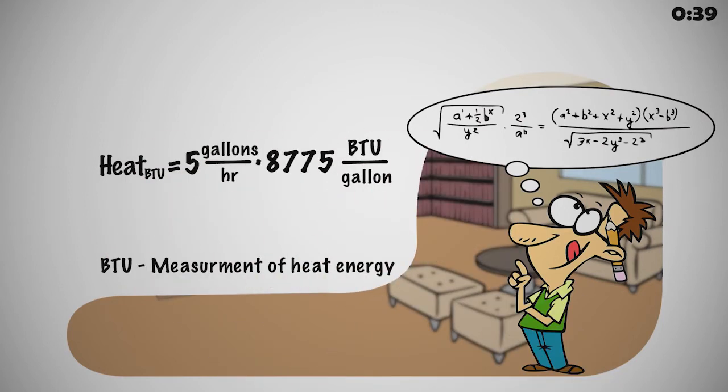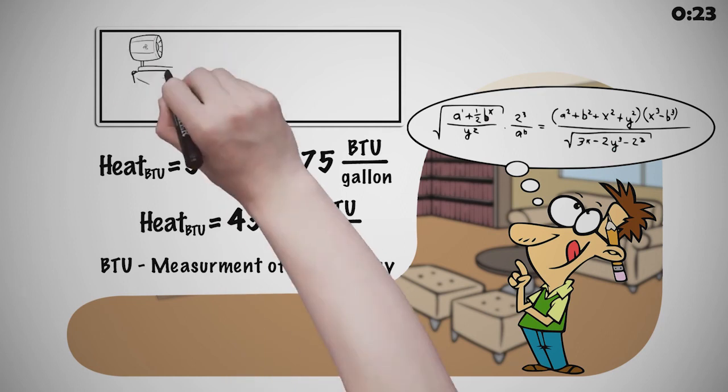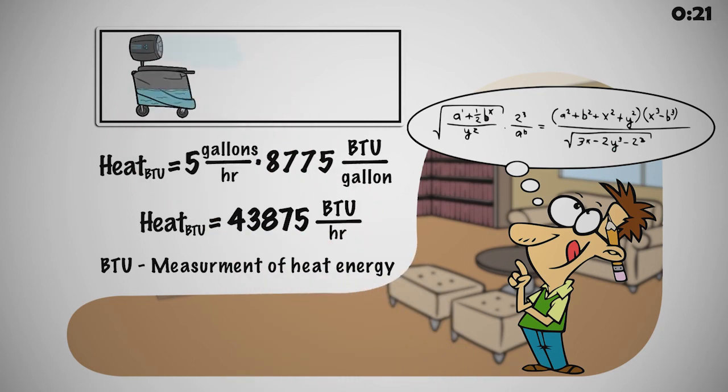Heat in the formula is expressed in BTU and equated to Power Breezer water evaporation at the rate of 5 gallons per hour, multiplied by 8,775 BTU per gallon, totaling 43,875 BTU. How much are 43,875 BTUs?